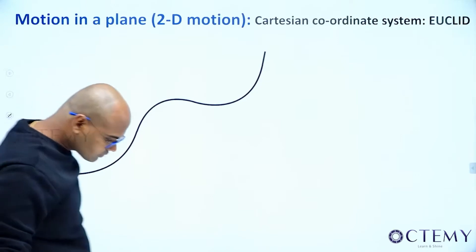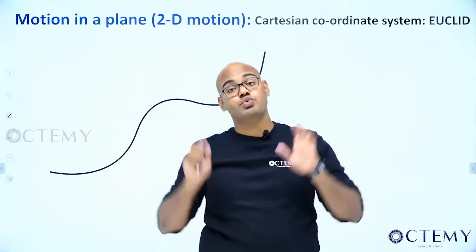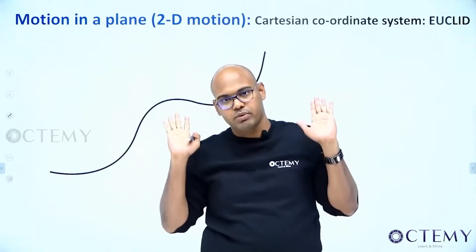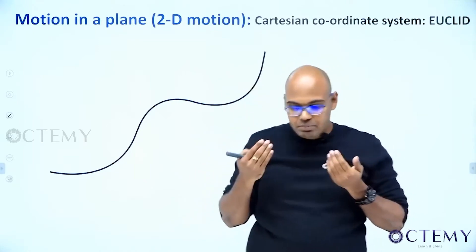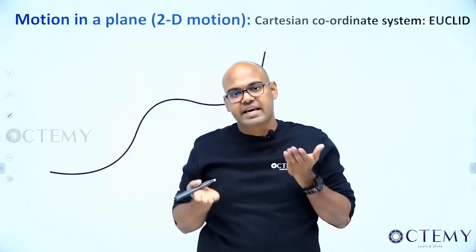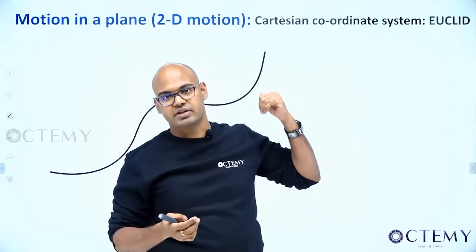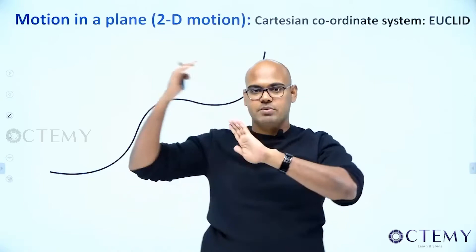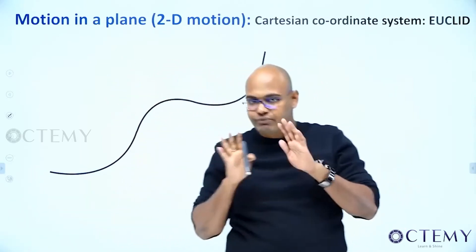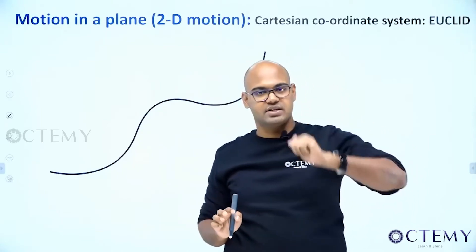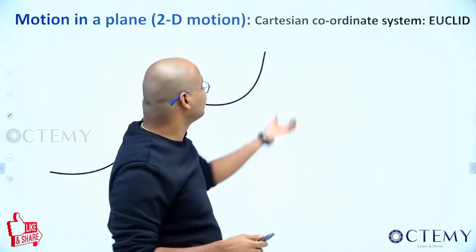There are two methods to solve this. The first method has been introduced by Newton, and that is the method we use for all our general problems. Later, another method was introduced because certain cases became difficult to analyze with Newton's method. I'll explain that other method at the start of circular motion. For now, we'll see Newton's method.